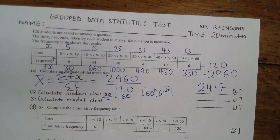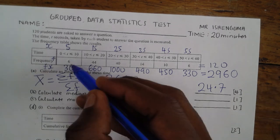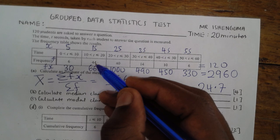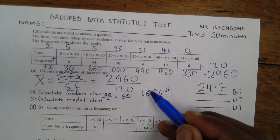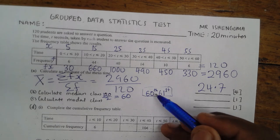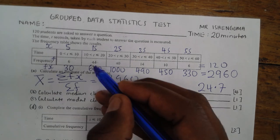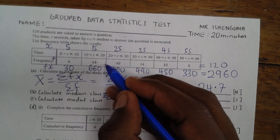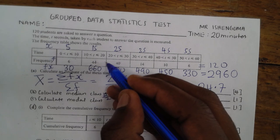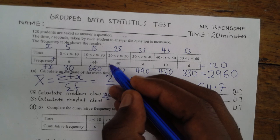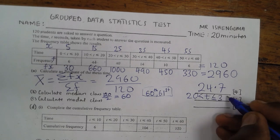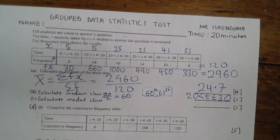Let's look at our cumulative frequency. At the start I have 6; 6 plus the next class gives a total of 50. The total 50 has not reached position 60, but 50 plus the next class takes me to a total of 90. So the 51st through 90th values are found in this class — hence the class 20 to 30 will contain our median values.